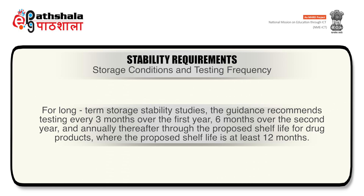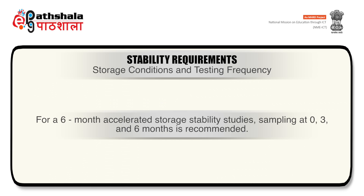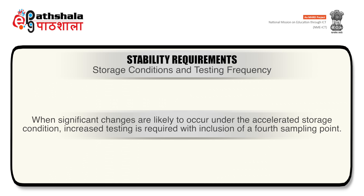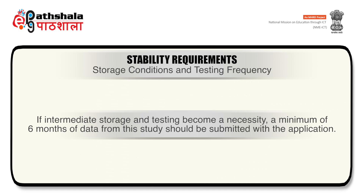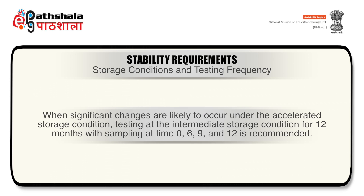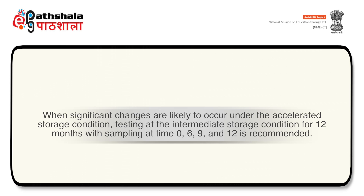For a 6-month accelerated storage stability study, sampling at 0, 3, or 6 months. When significant changes are likely to occur under the accelerated storage condition, increased testing is required with inclusion of a 4th sampling point. If intermediate storage and testing become unnecessary, a minimum of 6 months of data from this study should be submitted with the application. When significant changes are likely to occur under the accelerated storage condition, testing at the intermediate storage condition for 12 months with sampling at time 0, 6, 9 and 12 months is recommended.